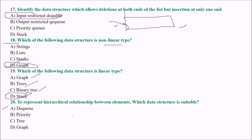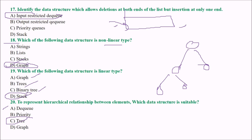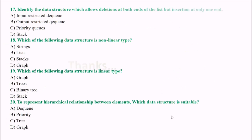Next: to represent a hierarchical relationship between elements, which data structure is used? The answer is tree, as it represents hierarchical relationships. This is the first installment of our data structure questions — these were basic. Next time we will go to more advanced questions. Thank you so much, take care.